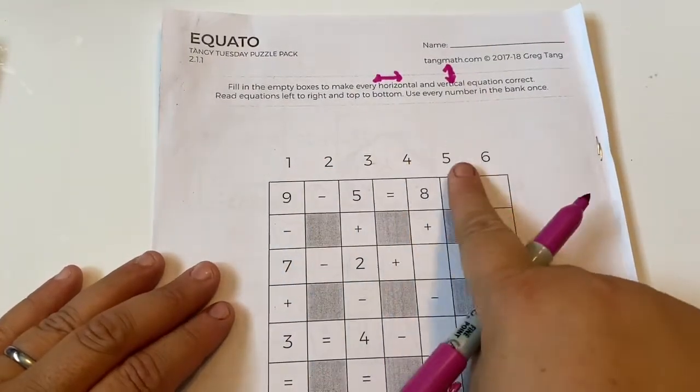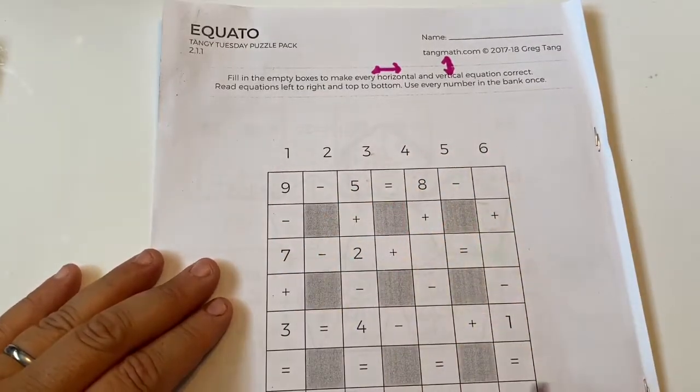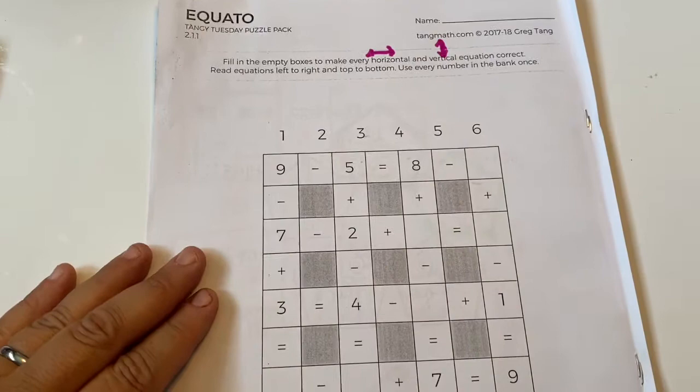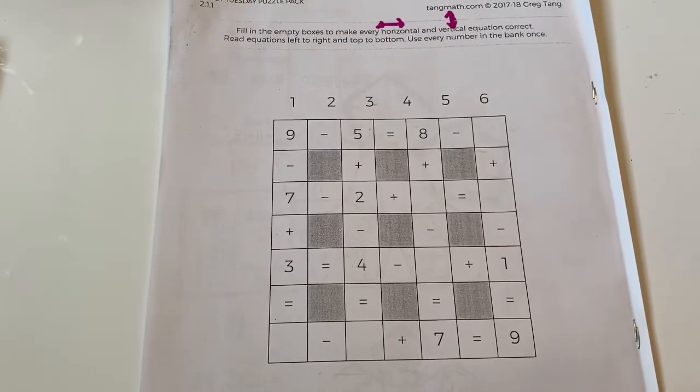Use every number in the bank once. And these are the numbers in the bank: one, two, three, four, five, six. So all of them are gonna be used once, but none of them are gonna be used double.